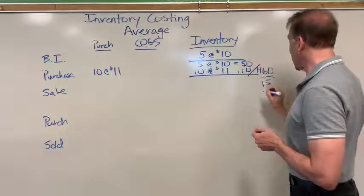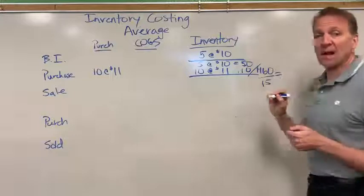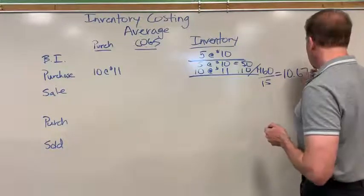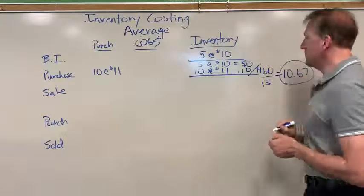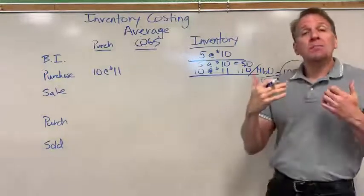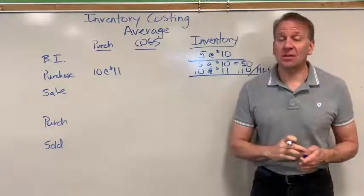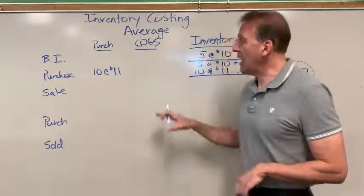Which then gives me my average cost, and I've rounded this to ten dollars and sixty-seven cents. So now all of our soccer balls are in inventory at the average cost of ten dollars and sixty-seven cents.